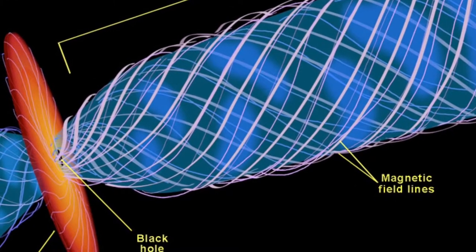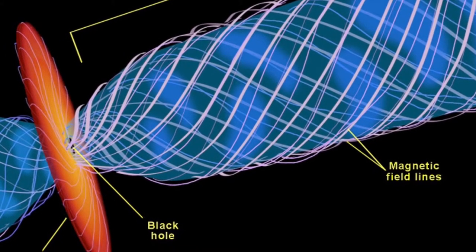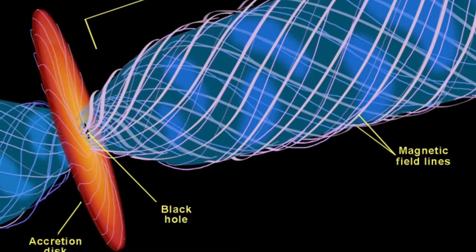The same process can happen if a normal star passes close to a black hole. In this case, the black hole can rip apart the star as it pulls it towards itself.